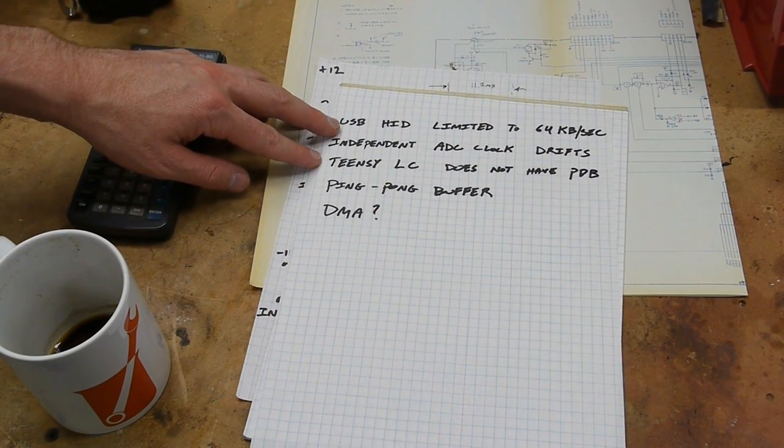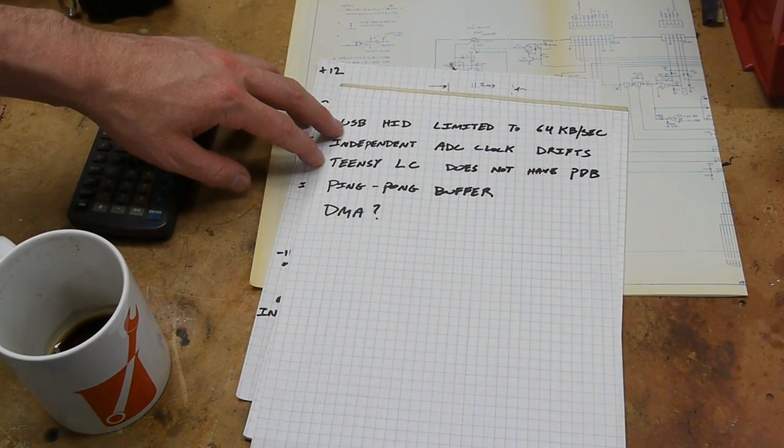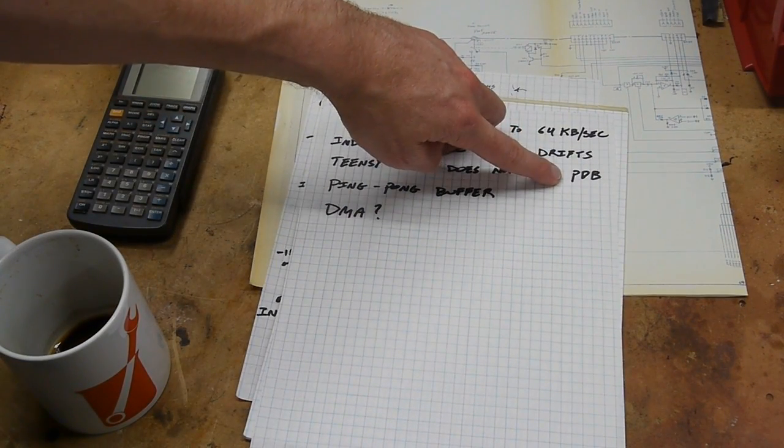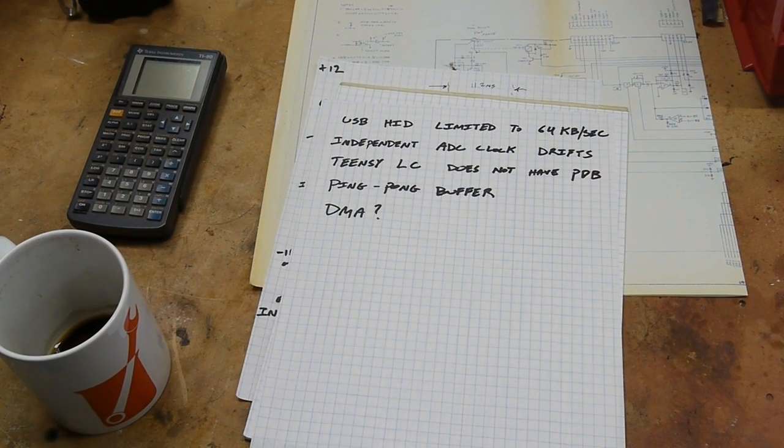Also, if you search around on the net about using the Teensy for projects like this—like audio projects and things like that—you'll find that people are talking about this PDB, the programmable delay block, which I had never heard of before reading about this in the Freescale controller. I thought, well, if you want something with accurate timing, you would just set up a timer and use an interrupt and put your code in there.